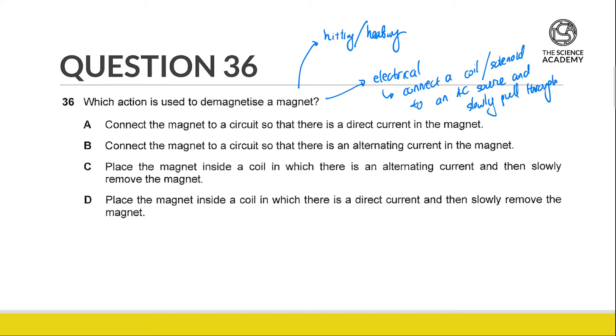This gives time for the dipoles to scramble. The only option that concurs with this is option C: place the magnet inside the coil where there's an alternating current and slowly remove the magnet.